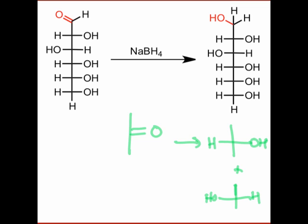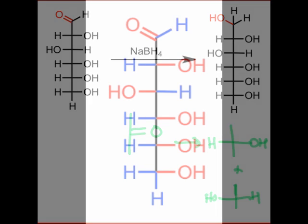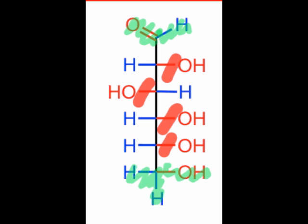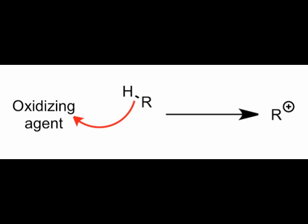Sugar oxidation is a little more complex, as there are multiple sites that are quite susceptible to oxidation. Although the inner hydroxyl groups are somewhat sterically hindered, the aldehyde and primary alcohol groups in aldoses are both susceptible to oxidation by strong reagents. Think of oxidizing agents in organic chemistry as H⁻ acceptors.